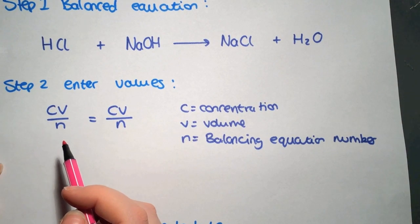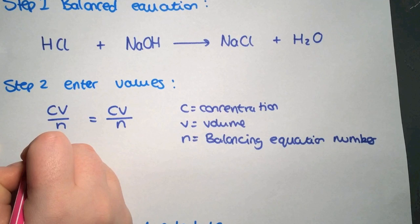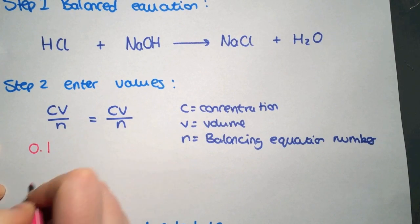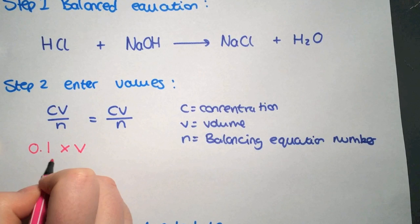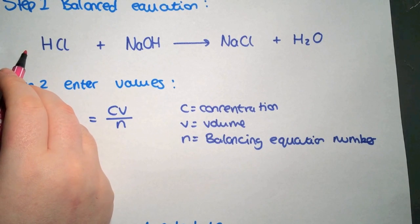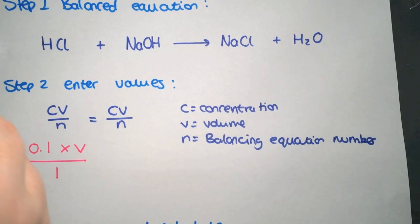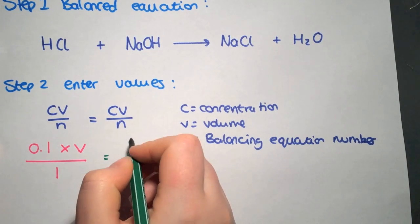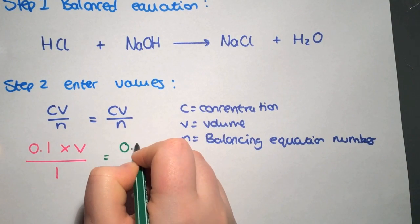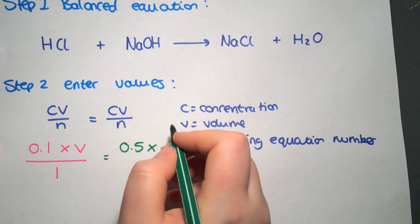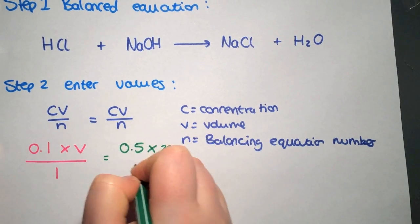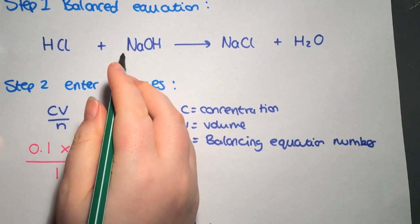So you simply put in the information that you have. We had a concentration of 0.1 multiplied by V because we're looking for the volume, divided by the coefficient here which is 1. And that equals the concentration which was 0.5 multiplied by 20, divided by 1.